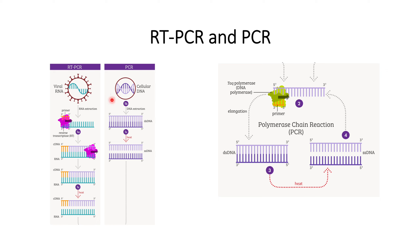How does RT-PCR differ from PCR? There is just a minute difference in the beginning. In the case of PCR, DNA is directly extracted from the sample with the help of cells — the cells are lysed and then DNA is extracted as double-stranded DNA. Then heating is done to break it down into single-stranded DNA, and the annealing step proceeds the same way. The only difference is that there is no reverse transcriptase in PCR, whereas in RT-PCR, reverse transcriptase is used to convert RNA into DNA.